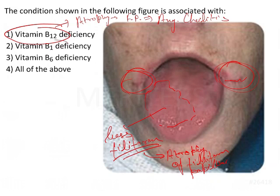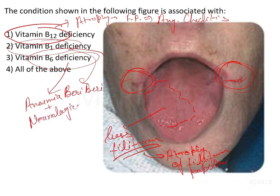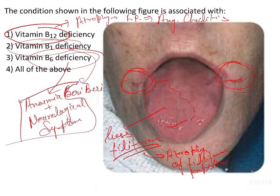Option 2 is Vitamin B1 deficiency, also known as thiamine deficiency, which is associated with the disease known as beriberi. Option 3 is Vitamin B6 deficiency, which is associated with anemia along with neurological symptoms. It is generally seen in patients on antitubercular therapy as well — that is a frequently asked question in exams.